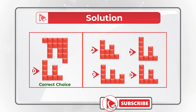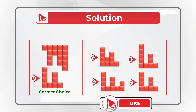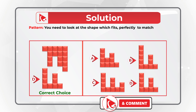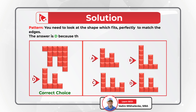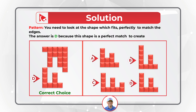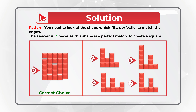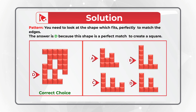To get to this answer, you need to look at the shape which fits perfectly to match the edges. Since this is a 5×5 square, Choice D is the perfect shape because it matches perfectly to create a full square.